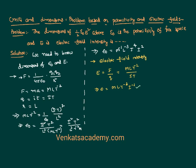Knowing the dimensions of both E and epsilon naught, calculating the dimensions of half epsilon naught E squared is now straightforward. Half is a pure number with no dimension. Epsilon naught is M⁻¹ L⁻³ T⁴ I², and E squared means we take the dimension of E — which is M L T⁻³ I⁻¹ — and square it.